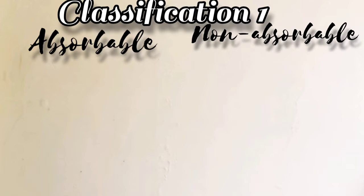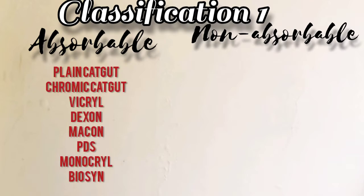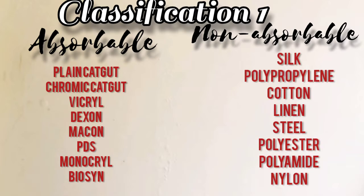Absorbable suture materials include plain catgut, chromic catgut, vicryl, dexon, maxon, PDS, monocryl, and biosyn.